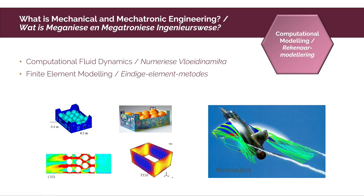Another research area is computational modeling. We use the foundations of natural science in complex computer models to analyze structures in mechanical or mechatronic engineering. On the right-hand side, you see computational fluid dynamics analyzing airflow across aircraft wings. On the left, there is an application to a simple product — a box for exporting fruit — where airflow across the fruit is analyzed to ensure no hot or cold spots during transport, and the structural integrity of the box is also analyzed using computer models. This shows advanced technologies applied to very simple products.